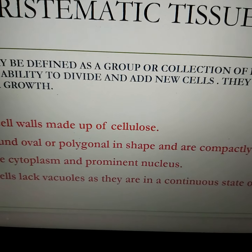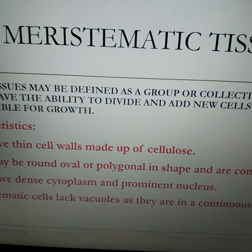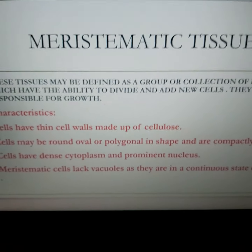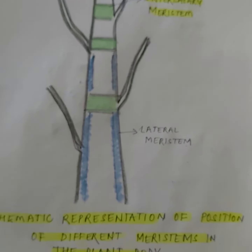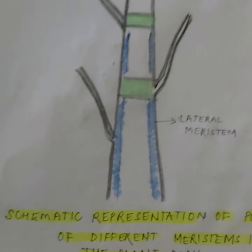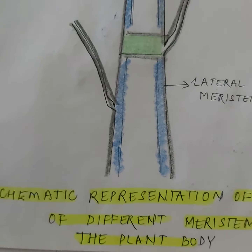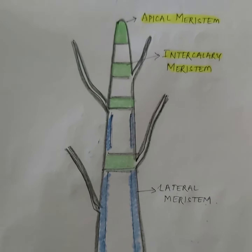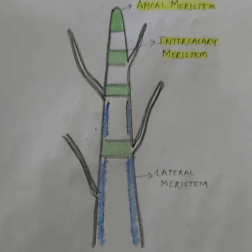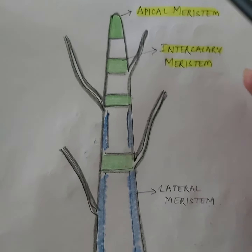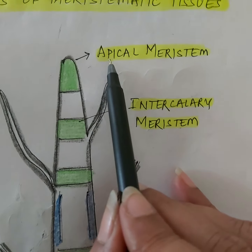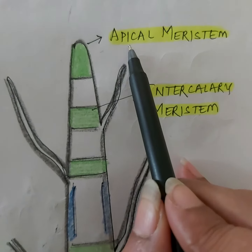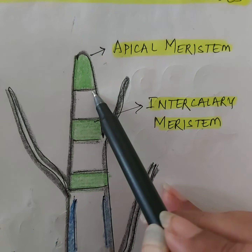So those are the characteristics of the cells forming the meristematic tissue. Let us now understand the types of meristematic tissue — for that, you have to understand their location in the plant body. Have a look at this diagram, which is also given in your NCERT — it is the schematic representation showing the position of different types of meristematic tissues in the plant body. Consider this diagram: this is a shoot — the part of the plant that grows above the soil. You can see that the first type of meristematic tissue is the apical meristematic tissue, located on the apex of the shoot.